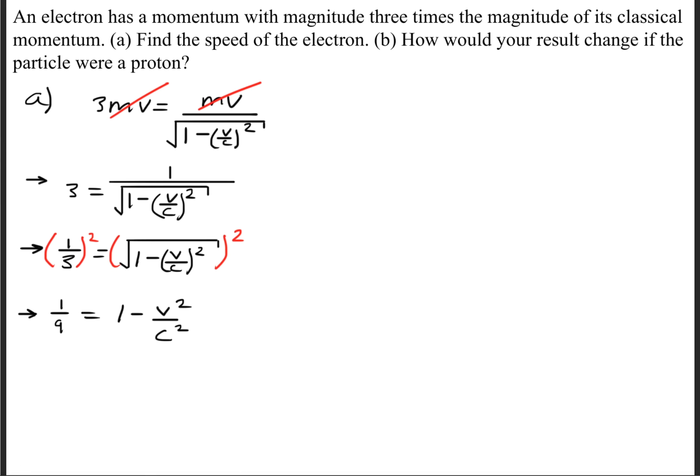Next we'll square both sides so that we get 1 over 9 is equal to 1 minus v squared divided by c squared.